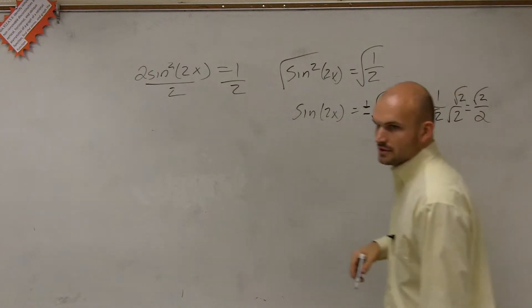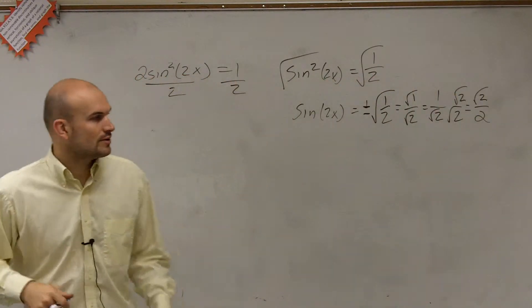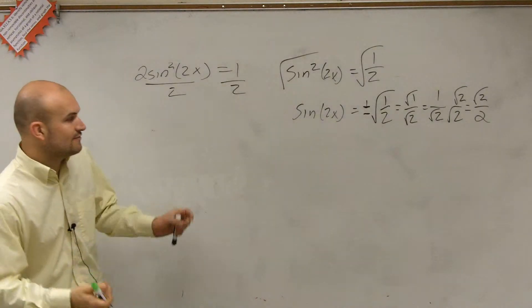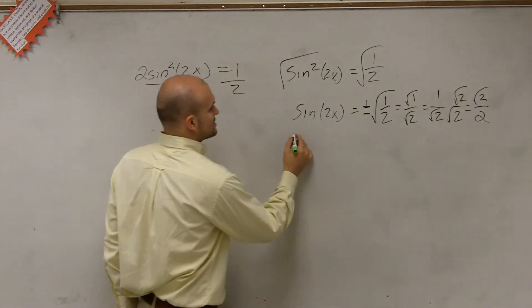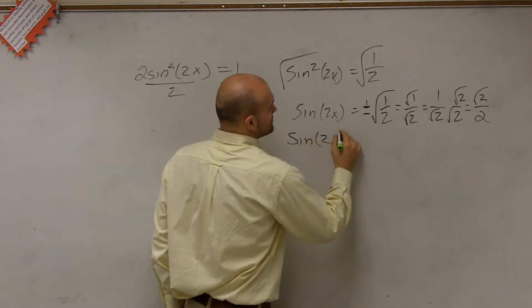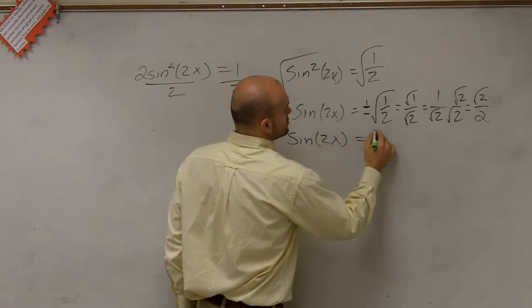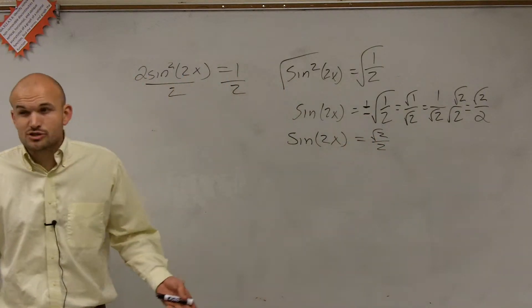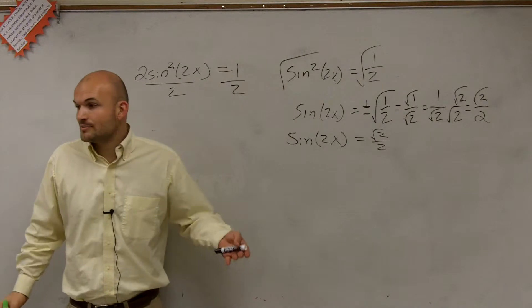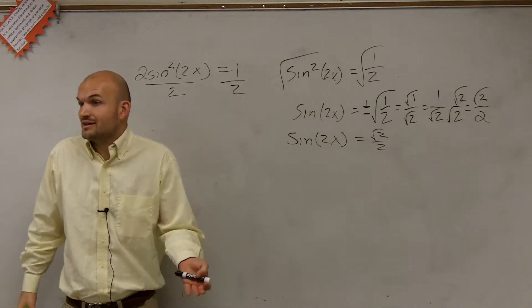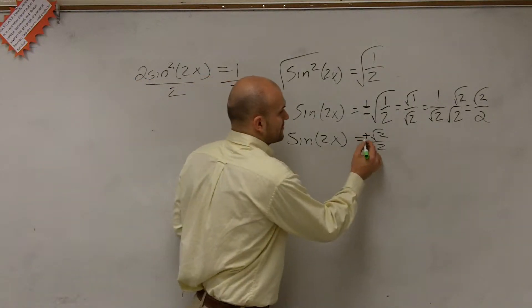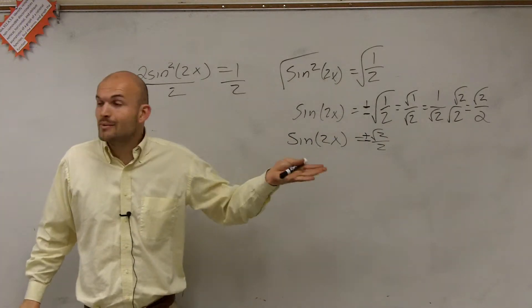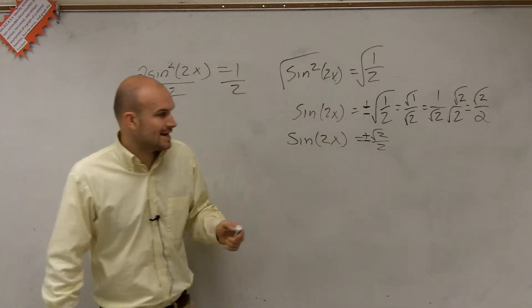And I get the square root of 2 over 2. Hopefully you guys get a little practice with square roots of rational numbers and get something like that. So therefore, I just have sine of 2x equals plus or minus square root of 2 over 2. Now, there is no constraint on my interval, so I am going to have to find this general solution.